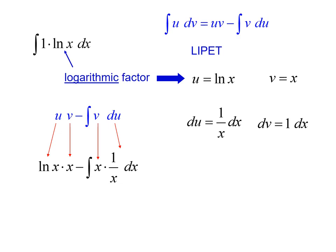So we have u v minus integral v du, that gives us x natural log of x minus the integral of x times 1 over x which is just 1, the integral of 1 is x. So the antiderivative of natural log of x is x natural log of x minus x plus c.